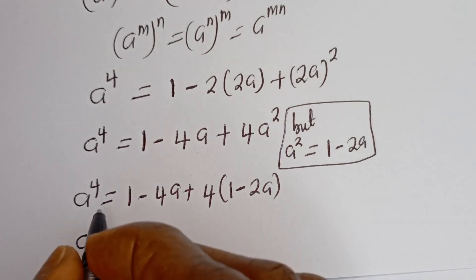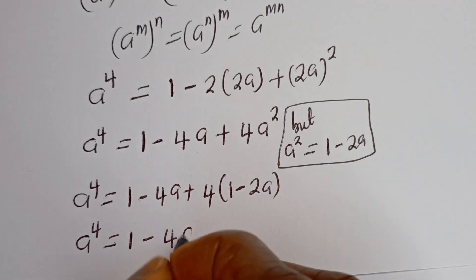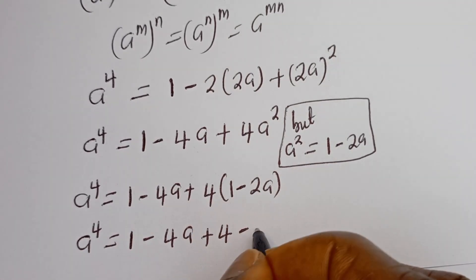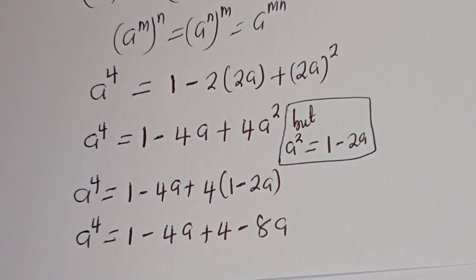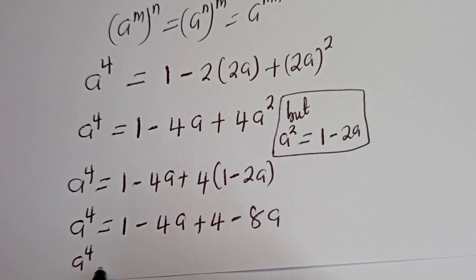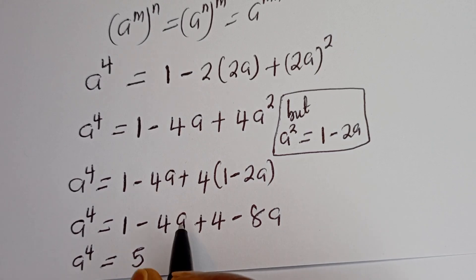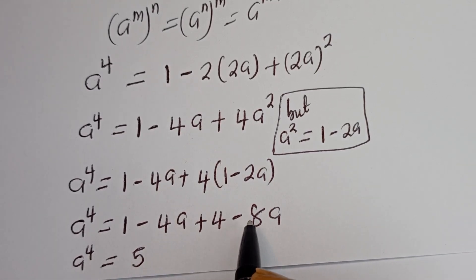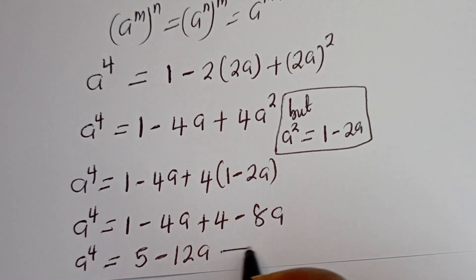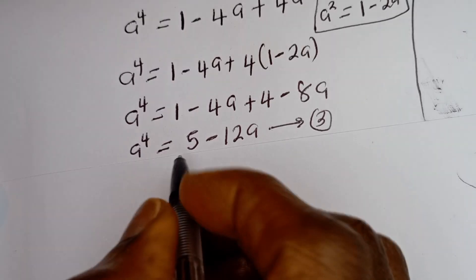This gives a to the power of 4 equals 1 minus 4a plus 4 minus 8a. Combining: 1 plus 4 is 5, and minus 4a minus 8a is minus 12a. So a to the power of 4 equals 5 minus 12a. Let's call this equation 3.